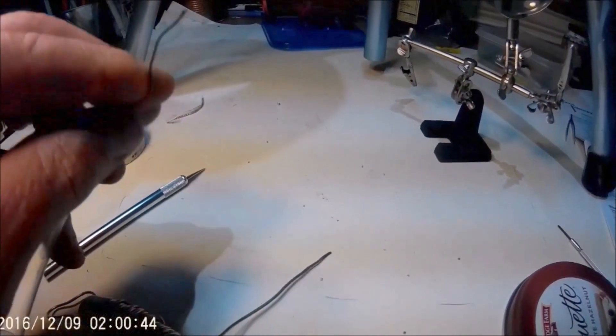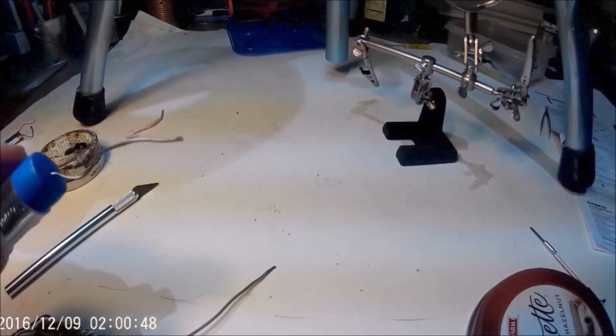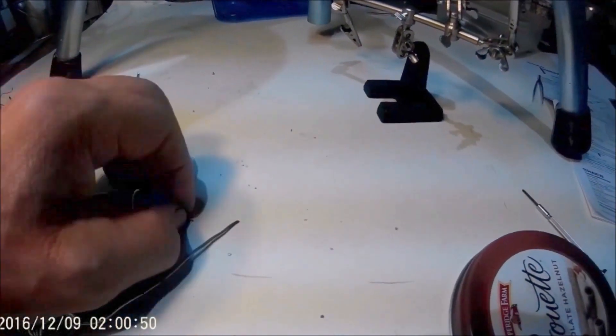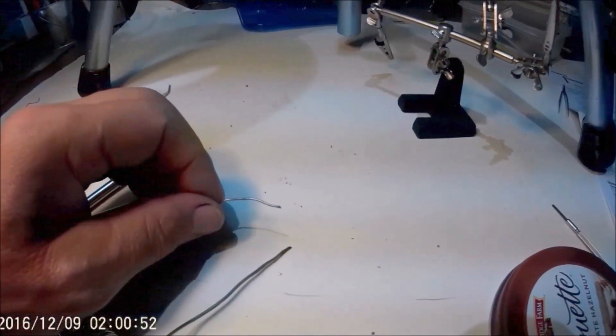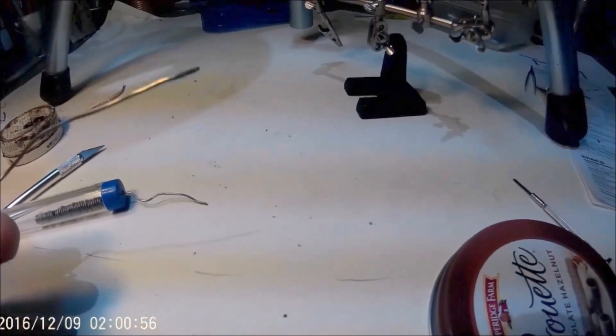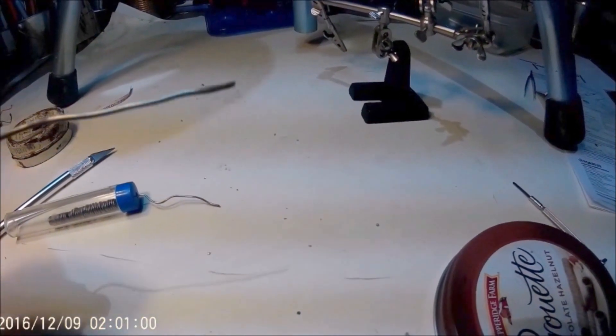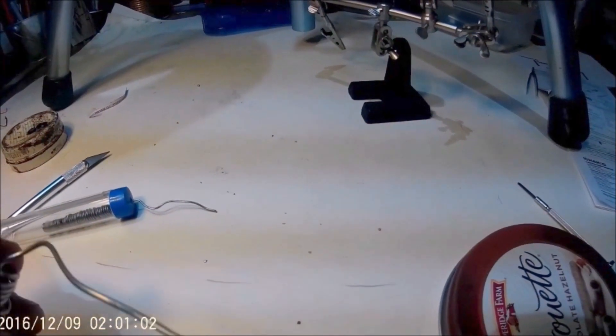This is the solder. This is a flux core solder, meaning that it's a thin wire, very thin, soft melting point, low melting point if you will, and it's got flux inside the core of it. So that helps to clean it without having to solder it. And this is a little bit thicker gauge solder for bigger joints, but for this type of work, we don't need it.